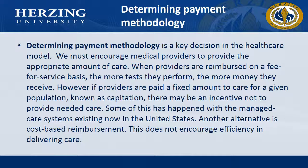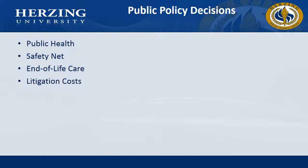Another alternative is cost-based reimbursement, which does not encourage efficiency in delivering care. This deals with the United States and not necessarily other developing or underdeveloped countries. Public policy decisions are based on public health, a safety net, end-of-life care, and litigation costs. As we know in the United States, litigation among healthcare continues to increase dramatically, and so this is something that needs to be addressed for public policy.